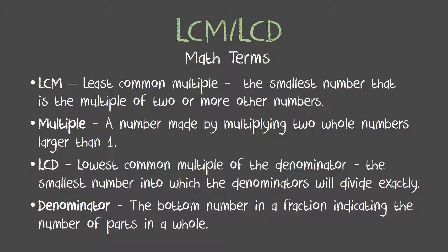So some math terms to help guide you in understanding this better. LCM stands for least common multiple, the smallest number that is the multiple of two or more other numbers. Multiple is a number made by multiplying two whole numbers larger than one.